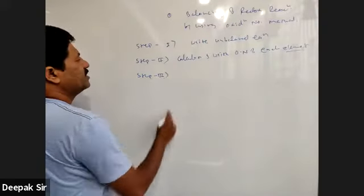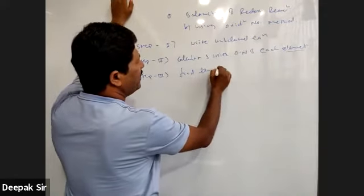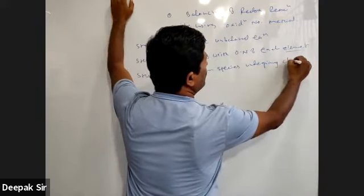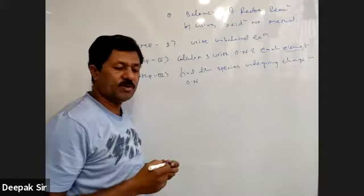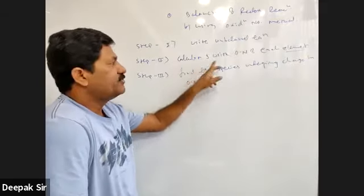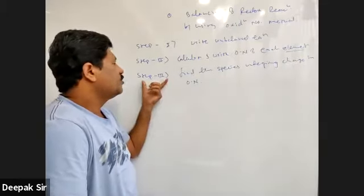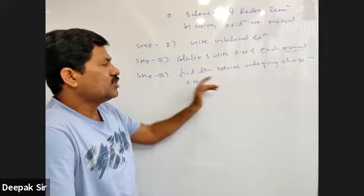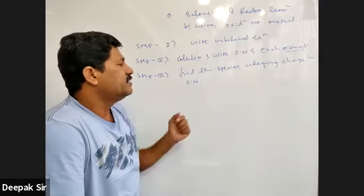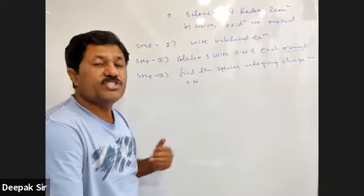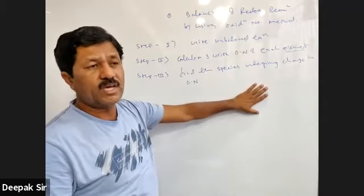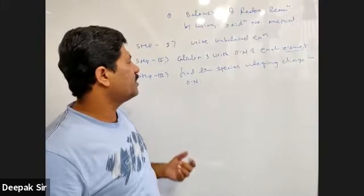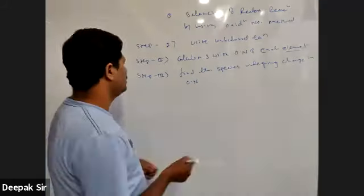Step number three — find the atoms or species undergoing a change in oxidation number. After step two, where we have calculated and written the oxidation numbers of every element, we now find out which species or atoms or ions are undergoing a change in oxidation number.